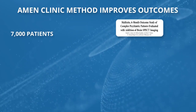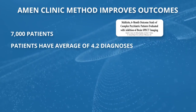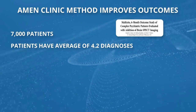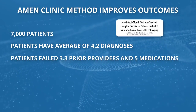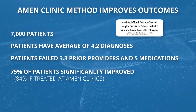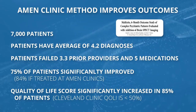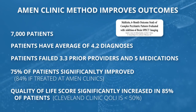The big question about imaging is: do patients get better faster? We have outcome studies on all of our patients — 7,000 outcomes. We published the first 500 in 2013. On average, our patients are complicated: they have 4.2 diagnoses, have failed 3.3 providers and 5 medications. At the end of 6 months, 75% are better. Treated here at Amen Clinics, 84% are better, and quality of life scores go up in 85% of patients. The Cleveland Clinic reported quality of life in their patients went up almost 50%.